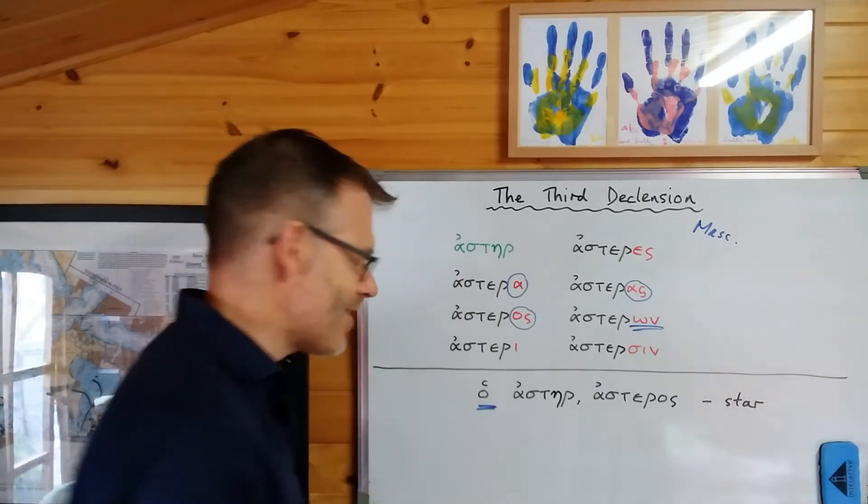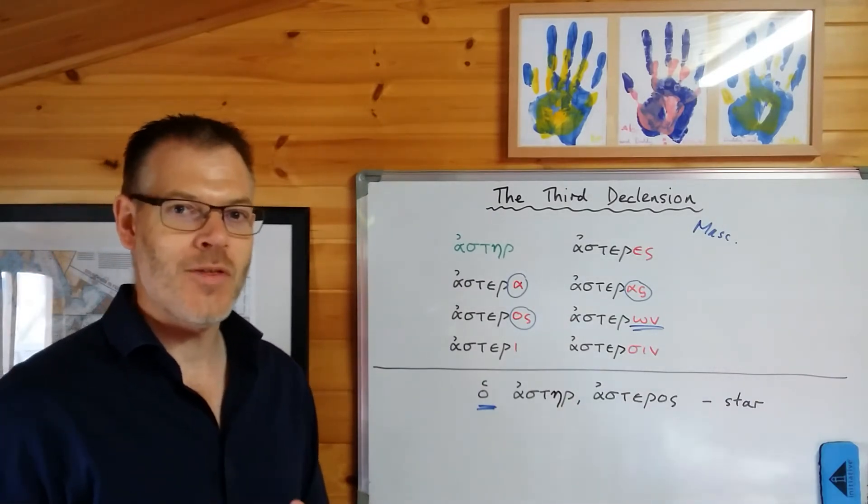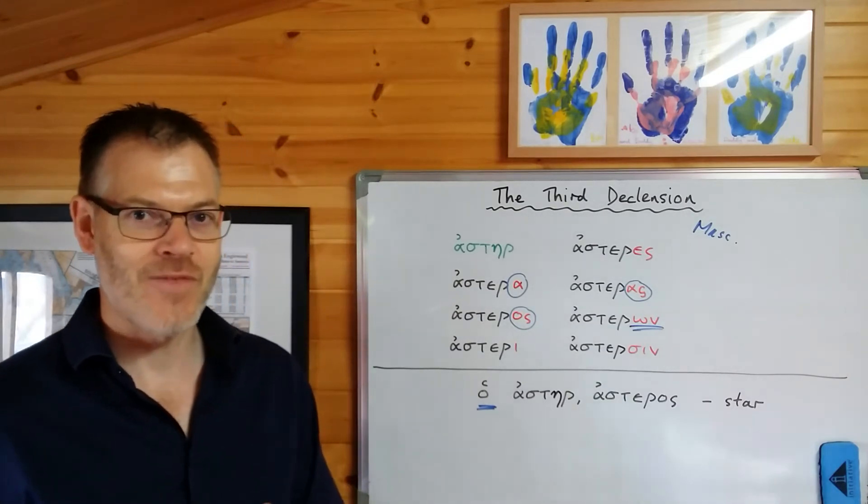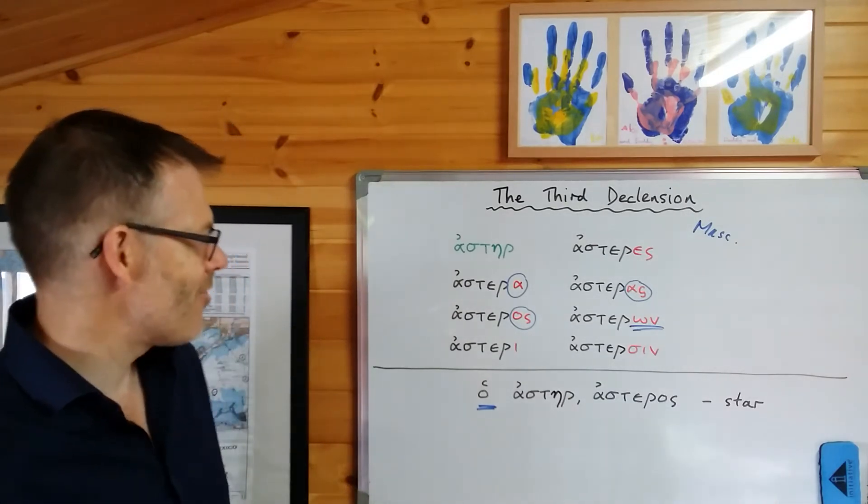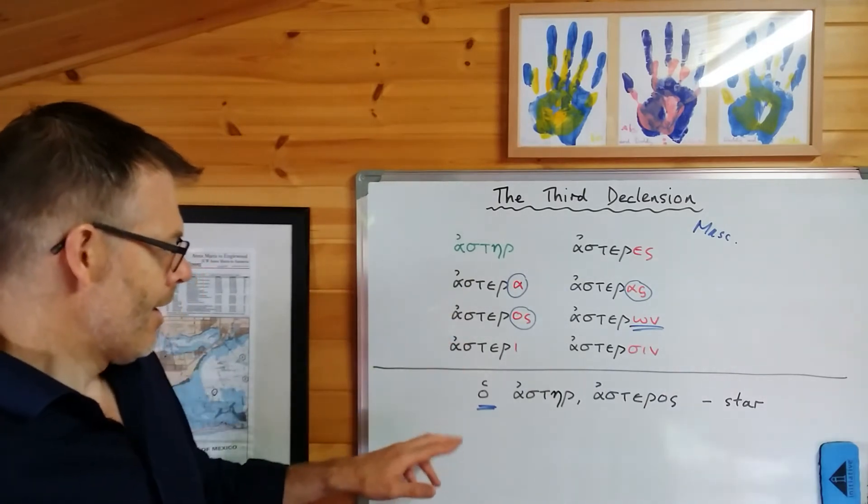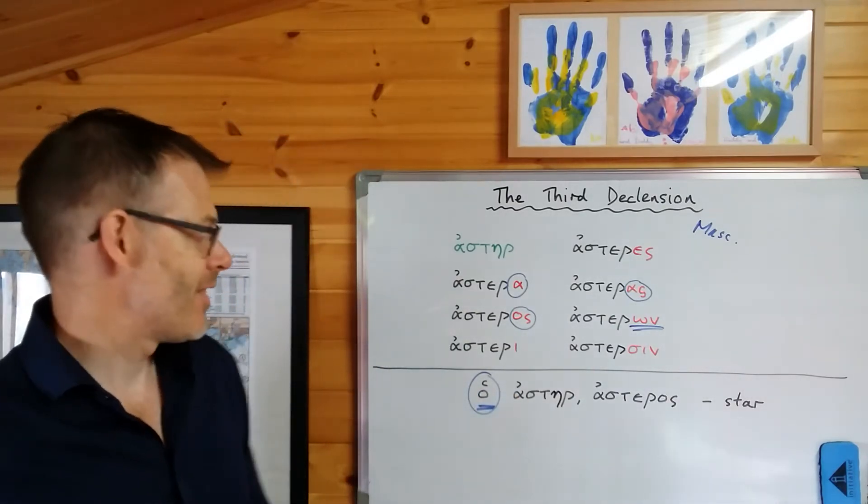...the article will be included along with the noun to tell you what gender it is. And I encourage you very, very strongly when you're learning it, don't just learn aster or asterat or whatever, come to that in a second, but learn it with the article because otherwise you won't know what gender it is and you're getting a bit of a tangle.